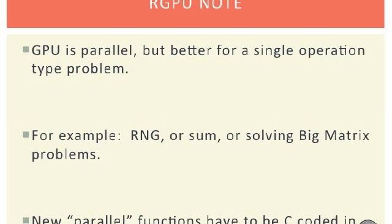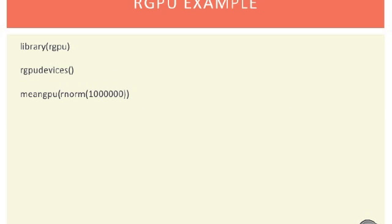Although GPU processing is parallel, it really works best for big matrix operations and functions that already exist. Getting new problems in there will require you to code your own CUDA functions in C. So here's a simple example: GPU devices will list out which devices are available for computing, and meanGPU will compute the mean on a large vector, and it returns really quickly.